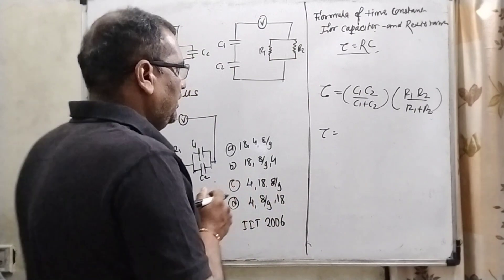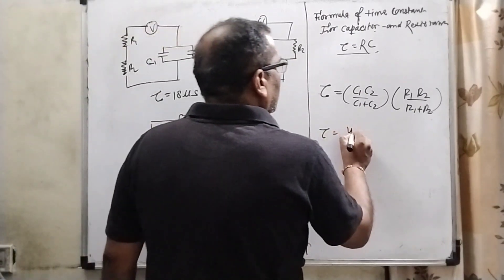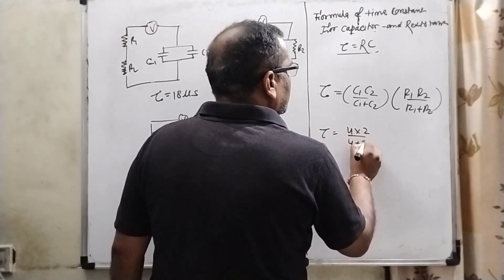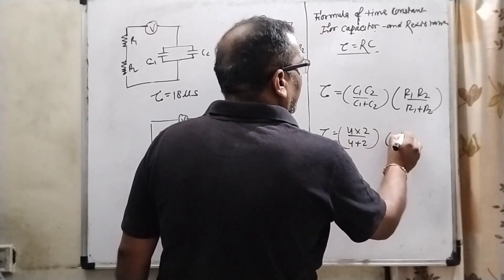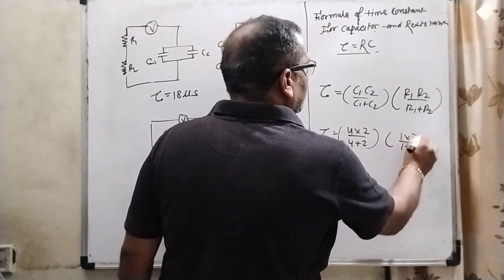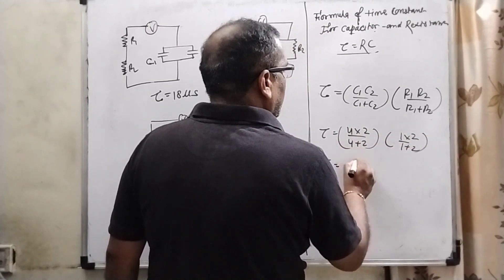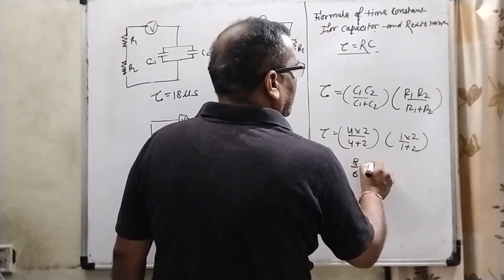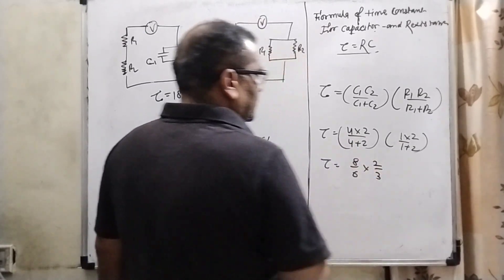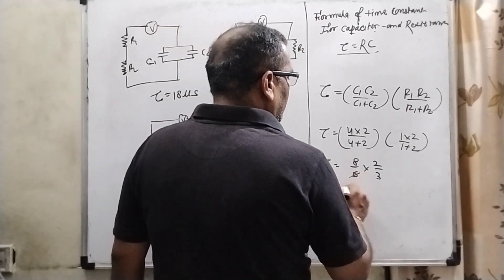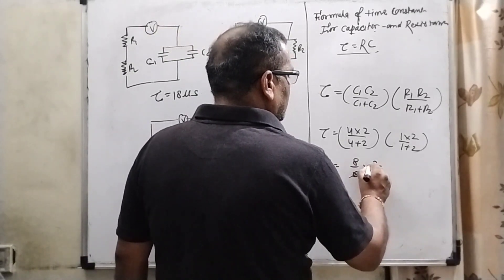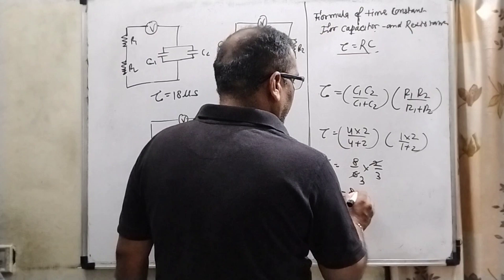Now substitute the value according to the given. C1, C2, 4 into 2, 4 plus 2. And here 1 into 2, 1 plus 2. 4 times 2 is 8, divided by 6, and 2 divided by 3. So here 2, 3 up, 6, 2s cancel. Tau equal to 8 by 9.